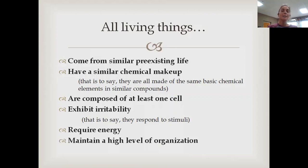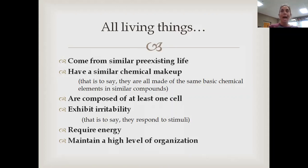All living things maintain a high level of organization, and we're going to start talking about that organization today. A complete multicellular organism like a dog is made up of organ systems — like the respiratory, digestive, and integumentary systems. Those systems are made of organs like the heart, liver, lung, and stomach. Organs are made of tissues — groups of cells that perform a particular function. Tissues are made of cells, cells are made of molecules, and molecules are made of atoms. We're going to start at the bottom of that organization and talk about atoms and molecules that make up living things. Even a single-cell bacterium is highly organized inside its one cell.